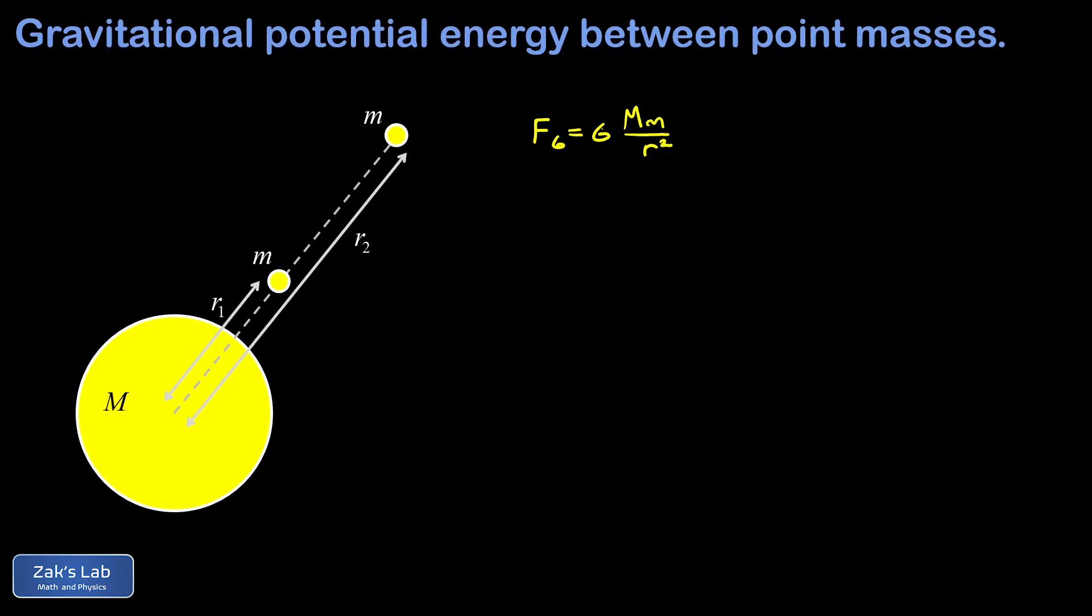Gravity is an attractive force, so that's going to give you the direction at any moment. It's always going to act to pull two masses toward each other. Now, we need to find the work done by gravity as we move this little mass m from that initial position to the final position.